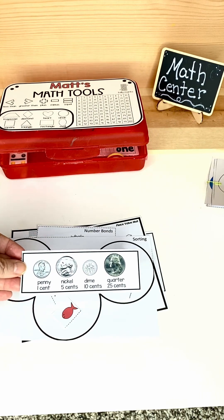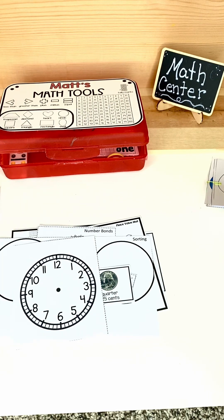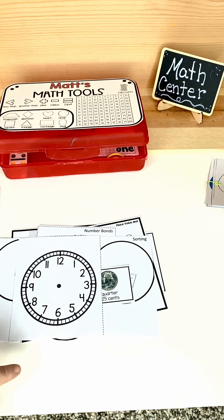This is money so they can help them identify the different coins. There are blank clocks. There's also one that has a digital on the bottom of it so they could put the hands in and write the digital.